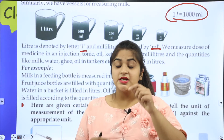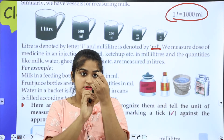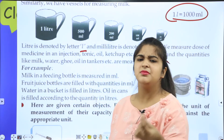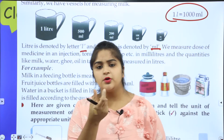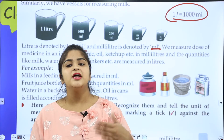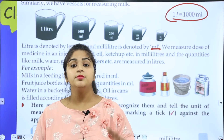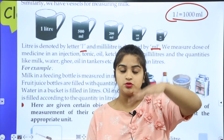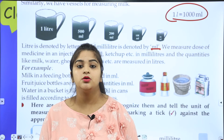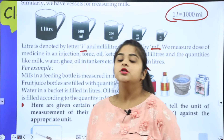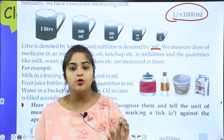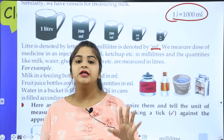For example, when it comes to an injection, it is measured in milliliters because it is a very small quantity. And when it comes to water or tankers, it is measured in liters because the quantity is more. So large quantities are measured in liters and small quantities are measured in milliliters.